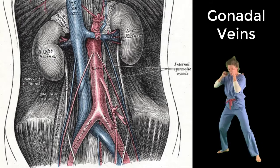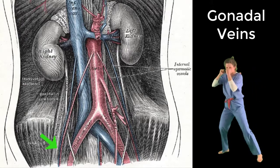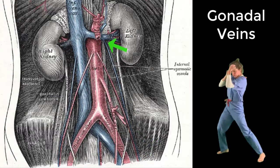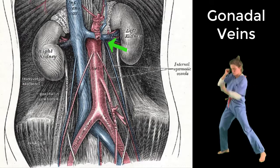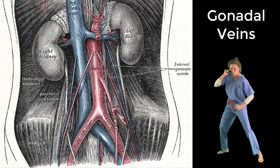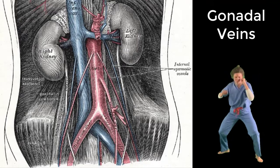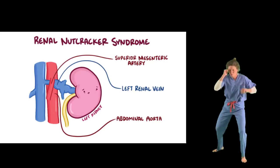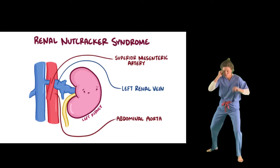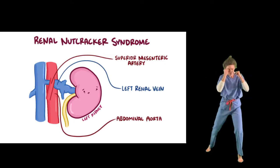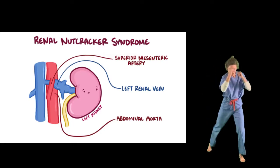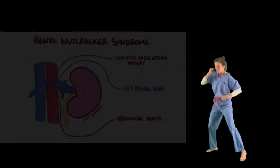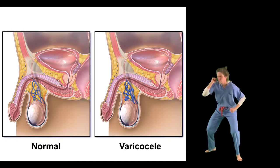The left and right gonadal veins differ by the vessel into which they drain. The right gonadal vein drains directly into the inferior vena cava, while the left gonadal vein takes an indirect path, first draining into the left renal vein. Compression of the left renal vein — known as nutcracker syndrome — most commonly results from a superior mesenteric artery that exits the aorta at too acute of an angle, pinching the renal vein, causing renal hypertension and potentially varicocele of the left testicle.